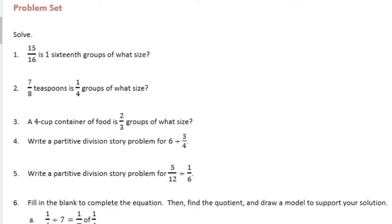Number 1: 15 sixteenths is 1 sixteenth groups of what size? So we have 15 sixteenths divided by 1 sixteenth. These will cancel each other out, and 15 divided by 1 is 15. So the size of the group is 15.